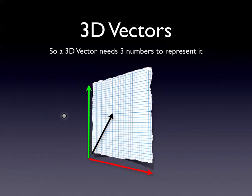3D vectors - same idea, except imagine it coming out of the graph paper. You've got your X and Y coordinates and then another one which comes out - the Z coordinate - and that gives you that third dimension and depth. We're going to demonstrate how to use these three-dimensional coordinates inside your computer to represent objects. You've got your three components, and this time the Z as well.